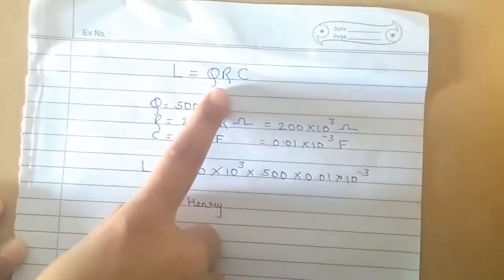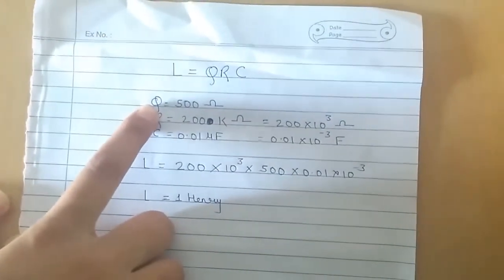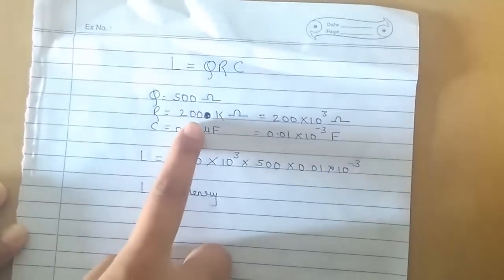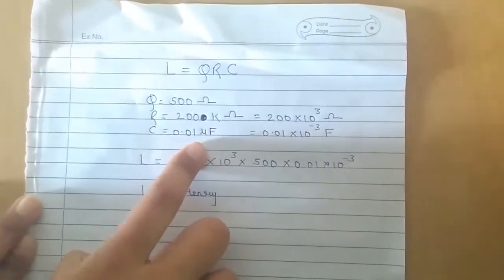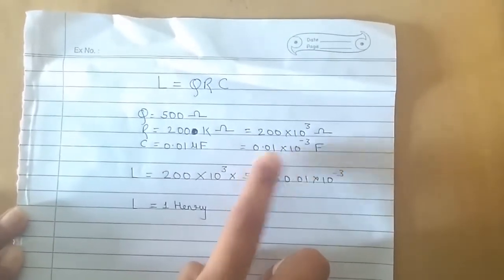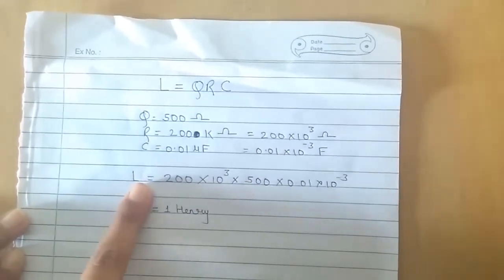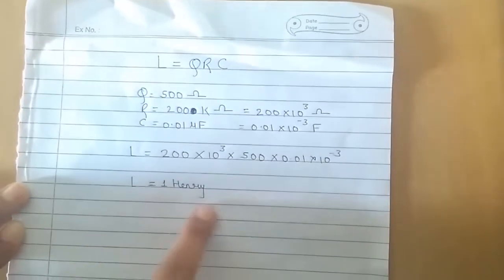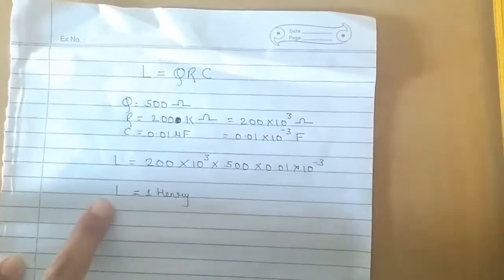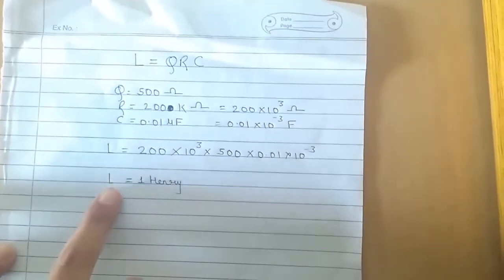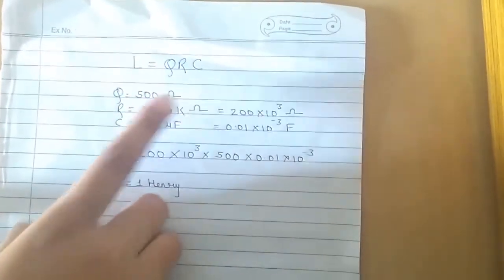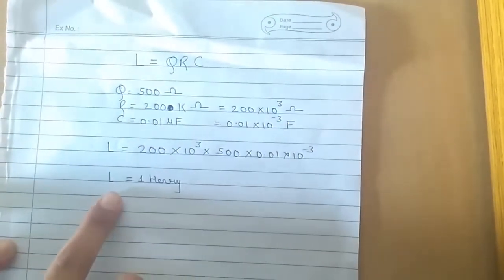Now have a look at the observations. We calculate the self-inductance using the formula L = Q × R × C. The value of Q is 500 Ohm, the value of R is 200 kilo Ohm (200 × 10³ Ohm), and the value of capacitance is 0.01 microfarad (0.01 × 10⁻⁶ Farad). Using this formula, the value of self-inductance is 1 Henry. Similarly, for Q at 1000 Ohm, and for Q at 500 Ohm with C at 0.02 microfarad, and for Q at 1000 Ohm with C at 0.02 microfarad — the value of self-inductance is 1 Henry.